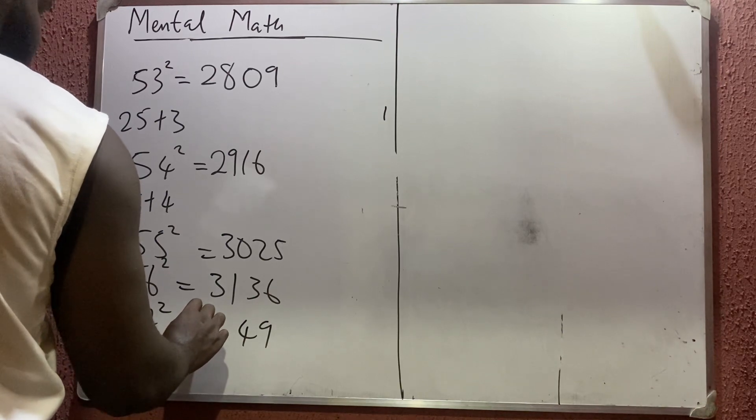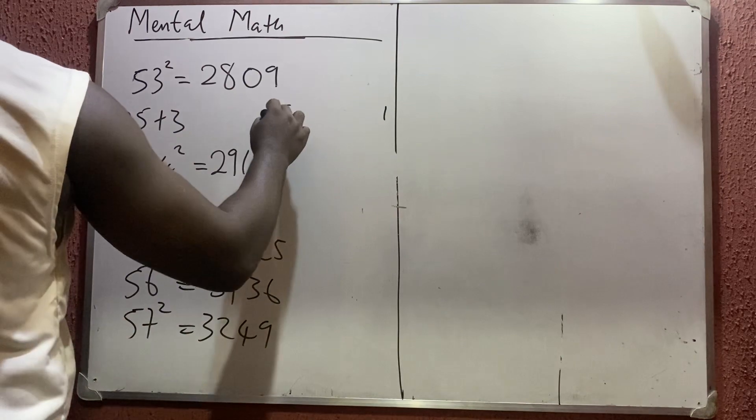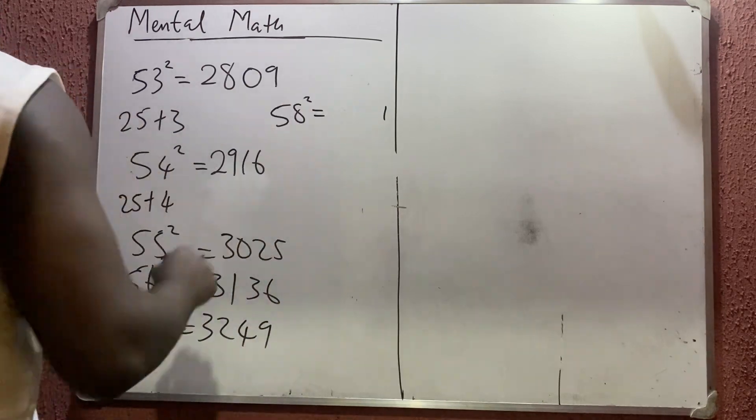58 squared. 8² is 64. 5² is 25. 25 plus 8 will give you 33. That's the answer.